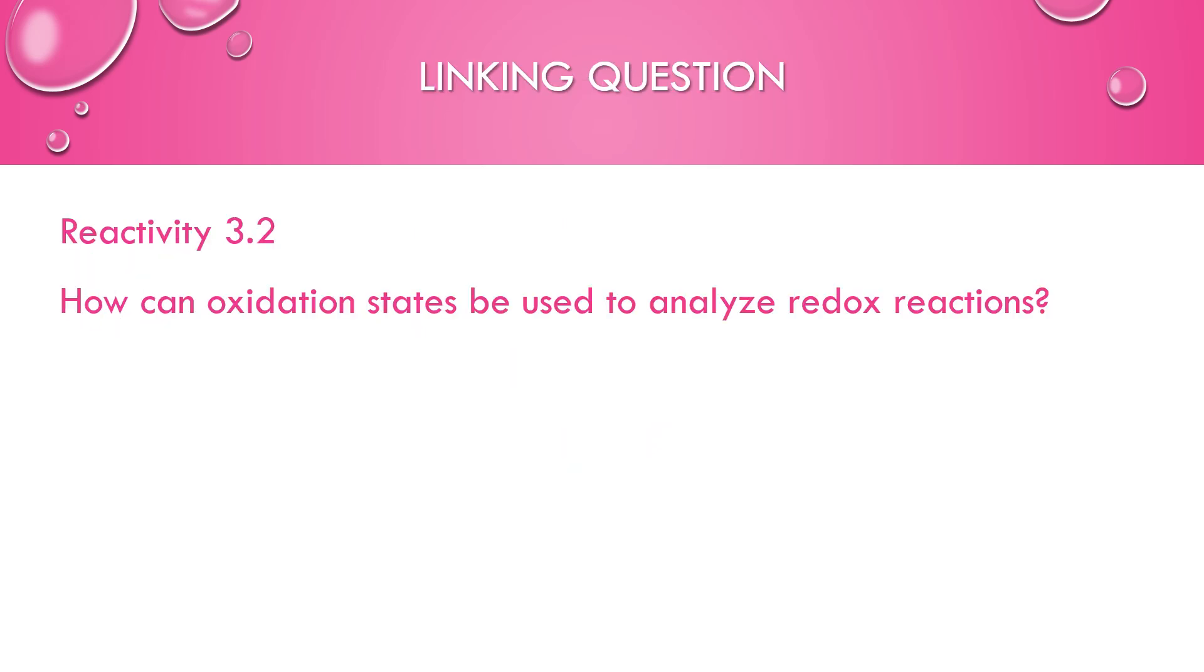This really links in to reactivity 3.2. How can oxidation states be used to analyze redox reactions? We know that if the oxidation number of an element is increasing, that thing must have been oxidized, or it must have lost electrons. And if the oxidation number was decreasing, it must have been reduced, or gained electrons in the reaction. This is going to be really important when we get to electrochemistry.